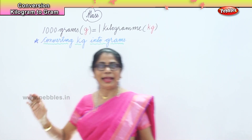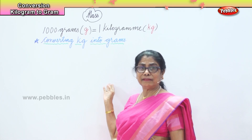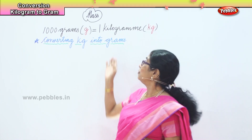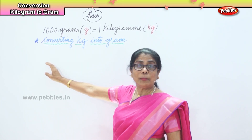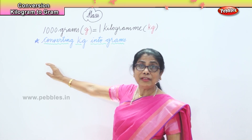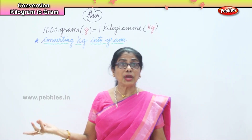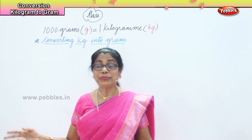If you have 5 kilograms to convert into grams, you multiply by 1000. So 5 into 1000 gives 5000 grams. It's very simple.